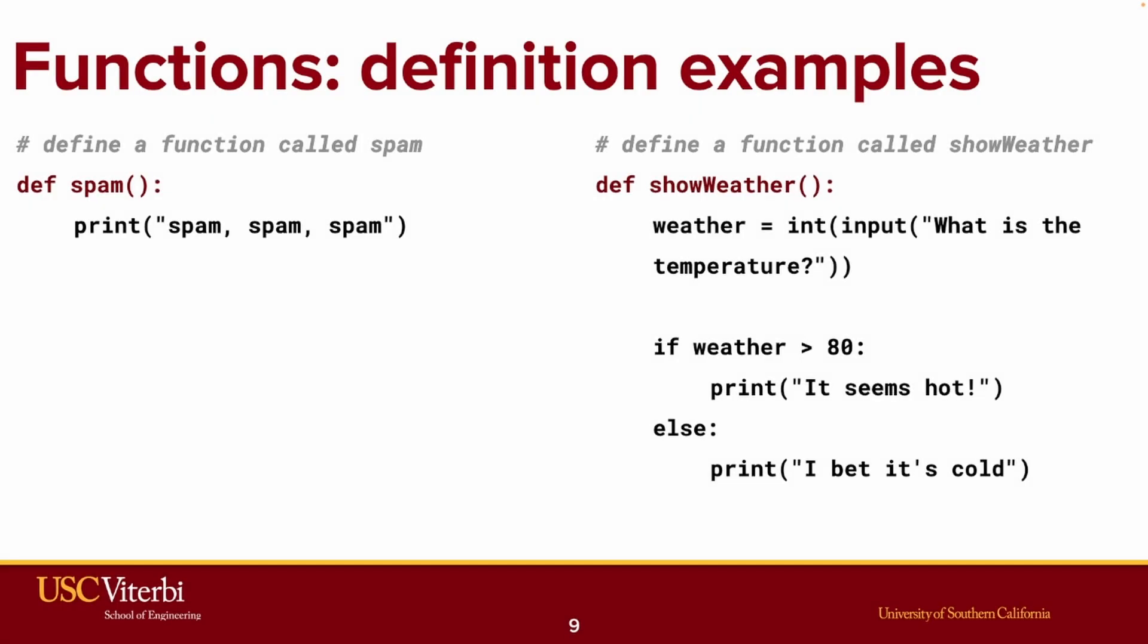Here are actually two examples of function definitions. The one on the left is called spam, and it prints out spam, spam, spam. The function definition on the right asks the user for what the temperature is. And if the temperature happens to be over 80, we're assuming, of course, that this is in Fahrenheit, then it seems hot. Otherwise, I bet it's cold.